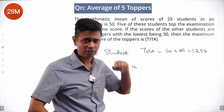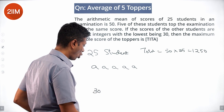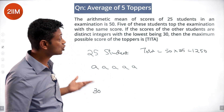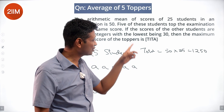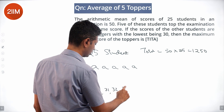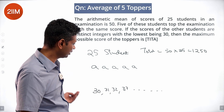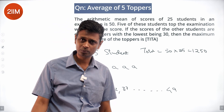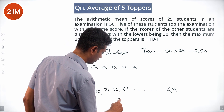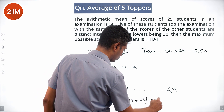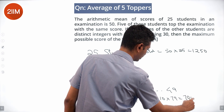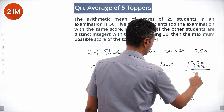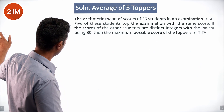To maximize the toppers' score, we minimize the remaining 20 students' total. Their scores are distinct integers starting from 30, so they run from 30 to 49 — that's 20 values. Sum = 20/2 × (30 + 49) = 10 × 79 = 790. So 5a = 1250 − 790 = 460, giving a = 92.